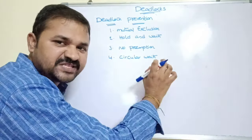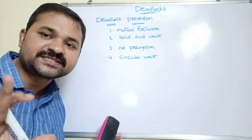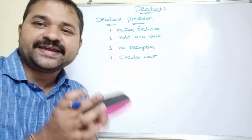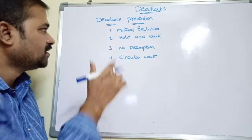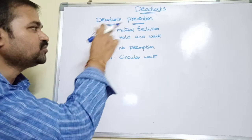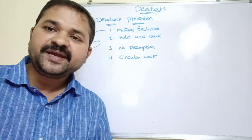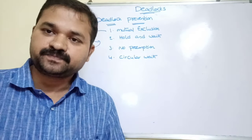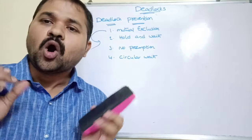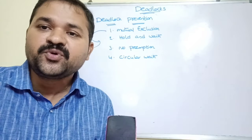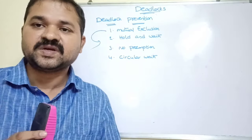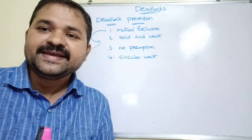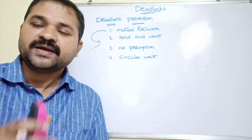Even if we eliminate one of these four conditions, we can say that there is no deadlock. Let's check whether we can eliminate any one of those conditions or not. The first one is mutual exclusion. Mutual exclusion means a process can use only one resource at a time — that means all the resources are non-shareable.